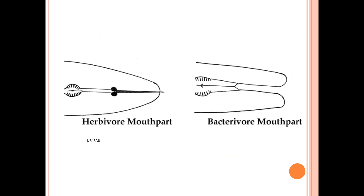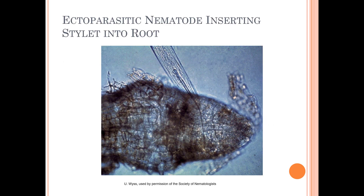Here are some examples of mouth parts. We're not so concerned with the bacterivore mouth part on the right that feeds on bacteria. Herbivores are what we're looking at — you can see there's a little needle-like thing called the stylet that comes out of the nematode. Here's what it looks like under a microscope.